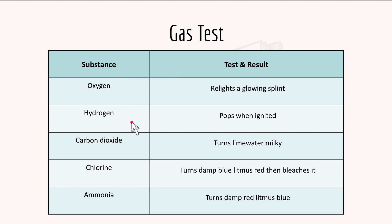For hydrogen it's basically the same - there's a test tube of hydrogen and you put a lit splint over the top of the test tube. If hydrogen is present it will make a squeaky pop sound, and it's called the pop test. For carbon dioxide, you bubble it through lime water and if CO2 is present it turns the lime water milky. But if CO2 keeps bubbling through, the milky lime water will eventually turn back to colorless.